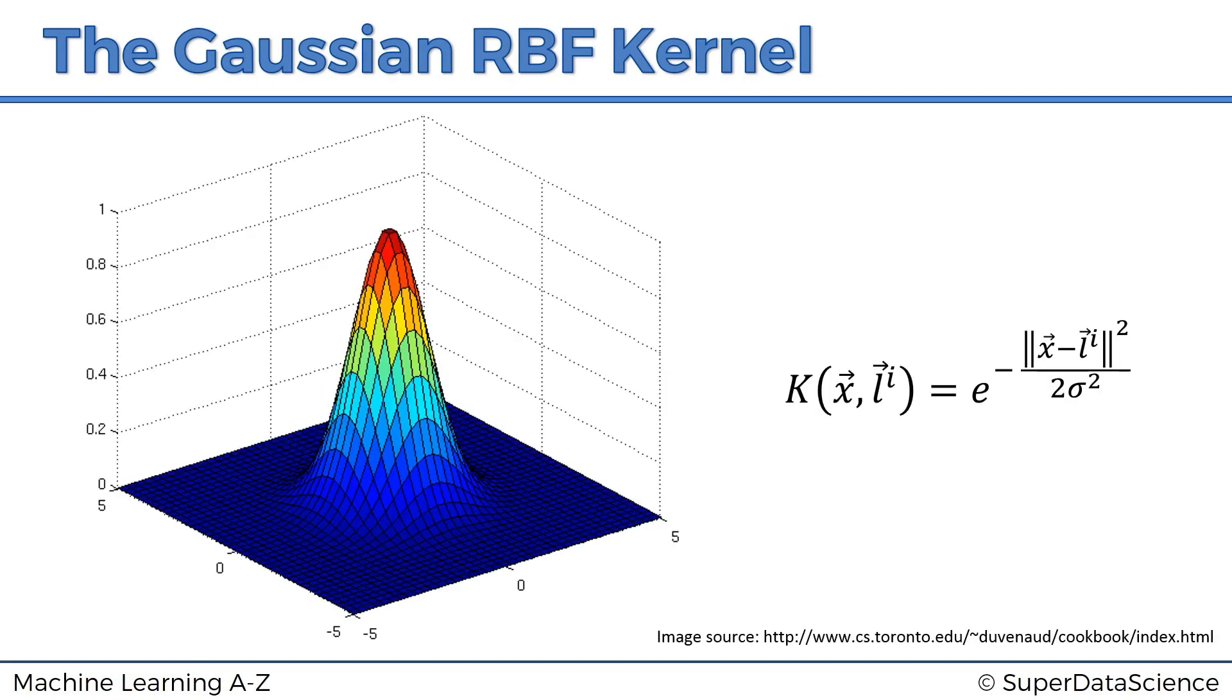Here I've got an image which represents this particular function for a specific sigma and a specific landmark, but this is what it looks like when you visualize it. What's happening here is we've got l, the landmark, actually in the middle of this plane. This is the x coordinate, this is the y coordinate; in the middle we've got (0,0) and that's where the landmark is actually located.